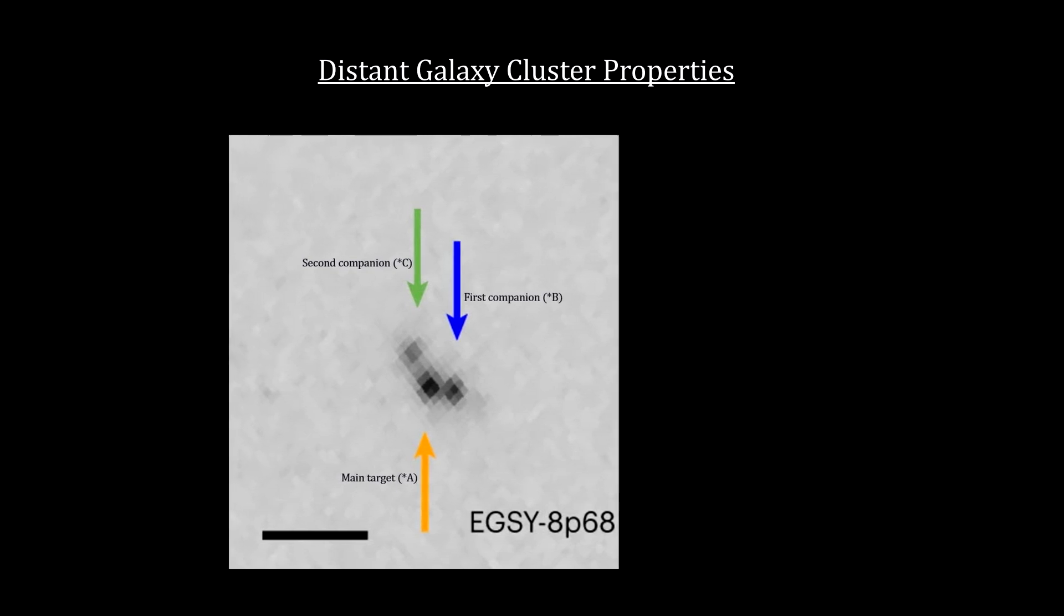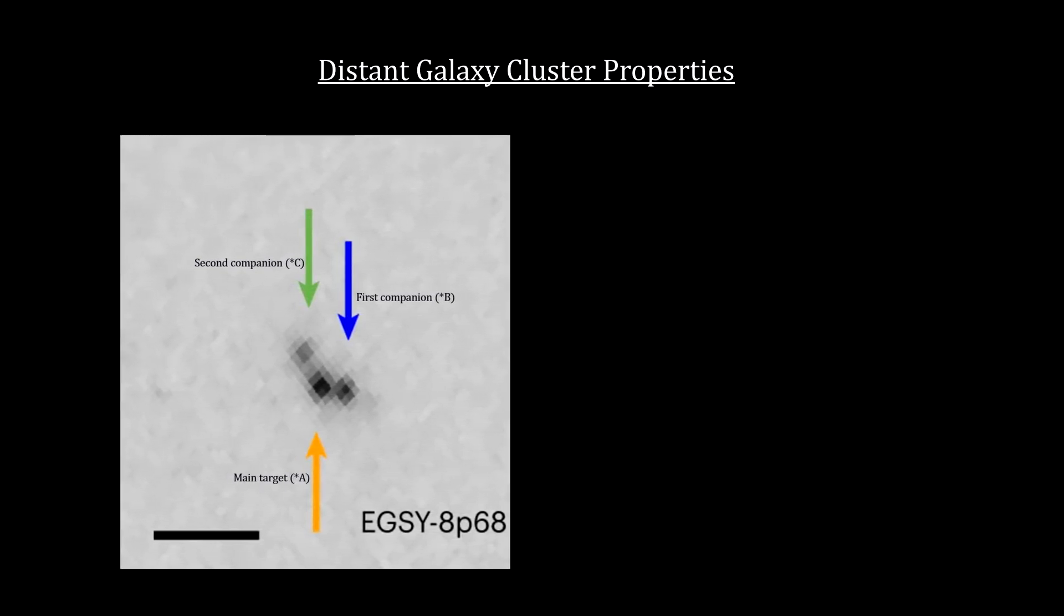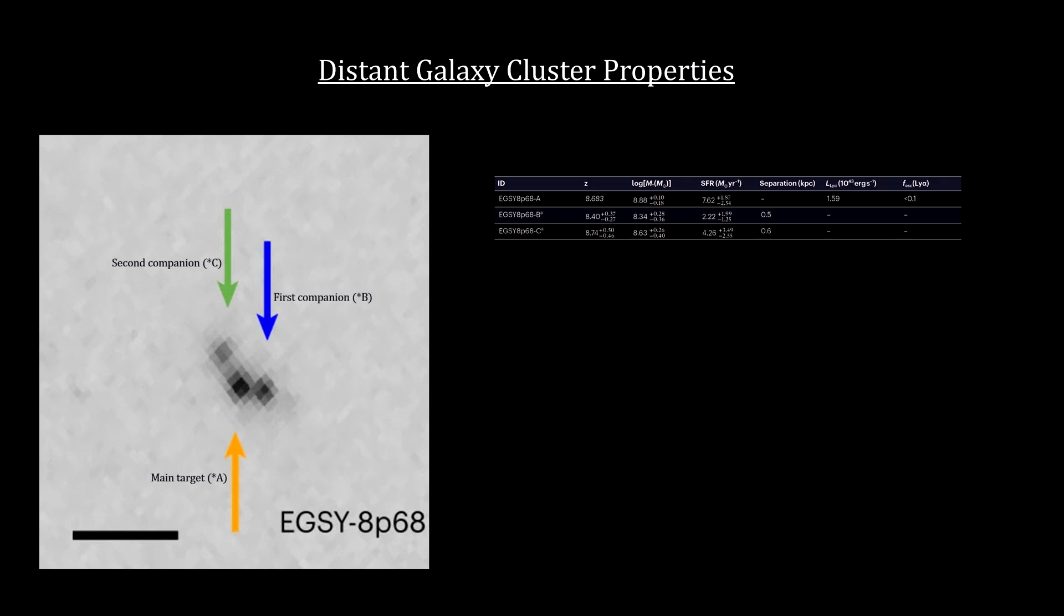Here's a closer look. A is the main target. It is the largest and brightest. B is 16,000 light-years to the right. C is just under 20,000 light-years to the upper left. Crucially, these smaller galaxies were interacting and merging with one another.